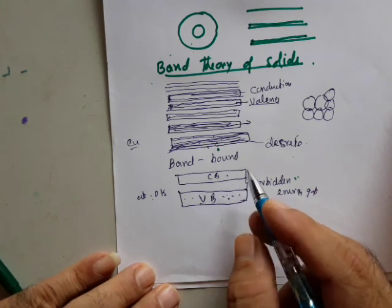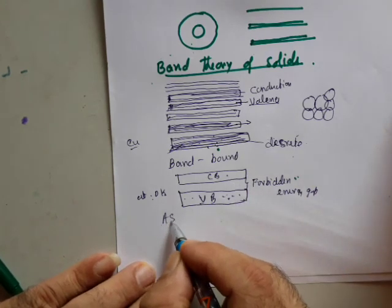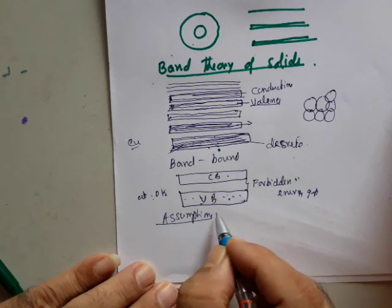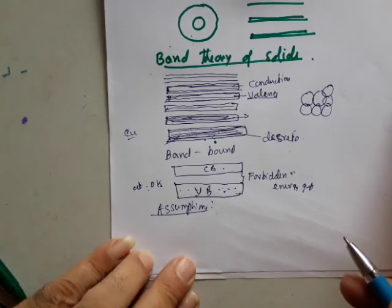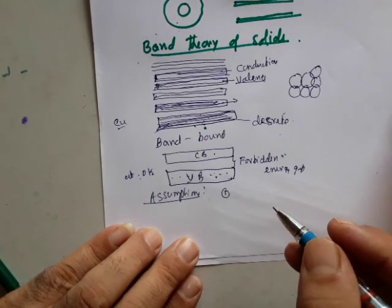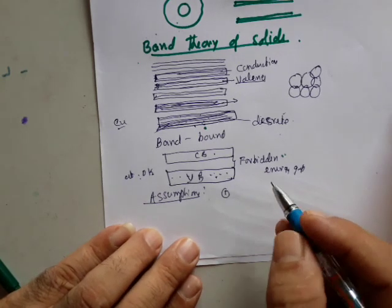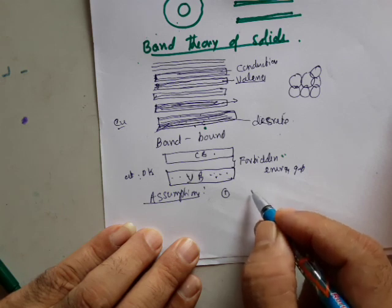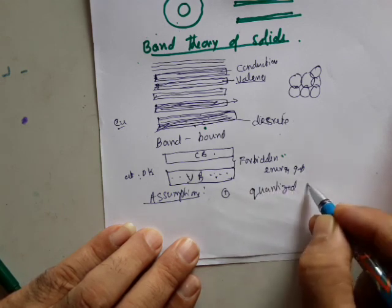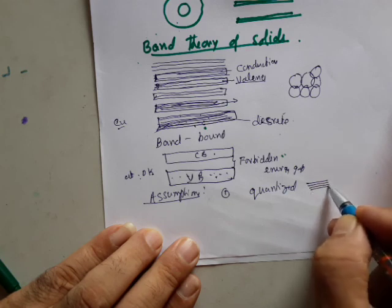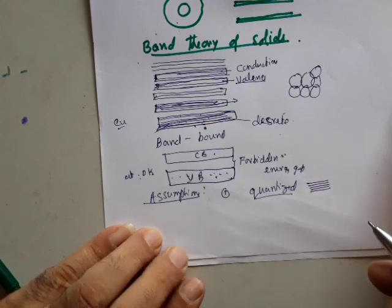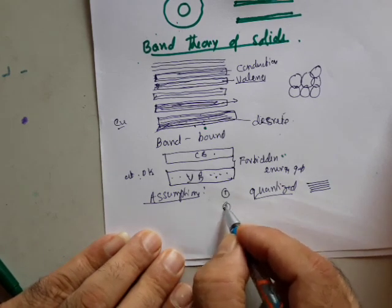To understand conductivity, we require certain assumptions. The first assumption according to the quantum free electron theory is that every energy level is discrete, or quantized in nature. Energy levels are not continuous — they are all in discrete form. Every energy level is quantized.